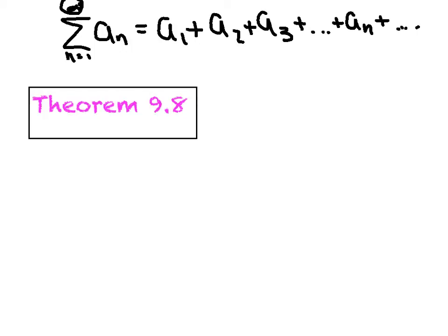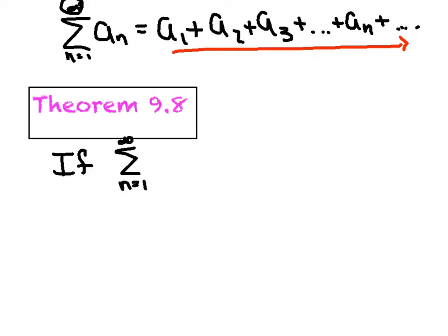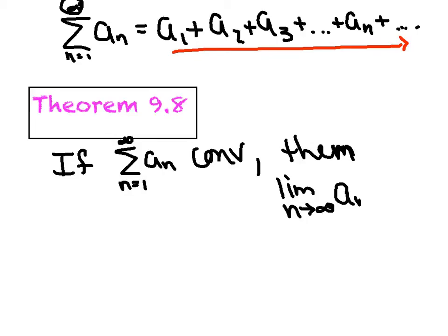For this series to even have a prayer of converging, what has to happen to these terms as we go further and further? I'd recommend that these terms have to continuously get smaller in order to even have a prayer of converging. Theorem 9.8 says: if our generic series of a sub n converges, then the limit as n approaches infinity of a sub n equals zero. Translating to English: the terms have to get smaller, approaching zero, so you're essentially adding zero onto your cumulative sum — that's how you get a converging series.